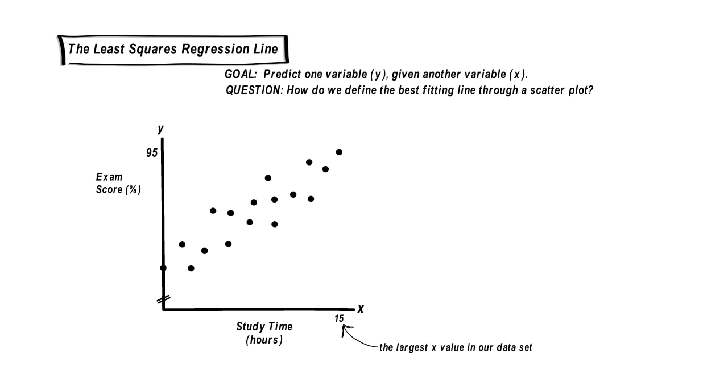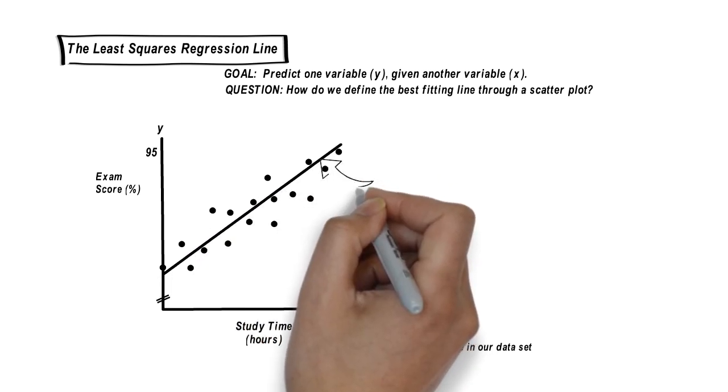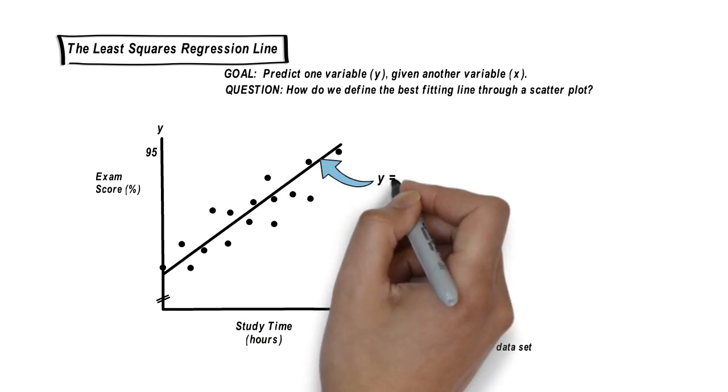So here we go. Let's say this line is the best line through the dots. We can model it with a simple linear equation, y equals b plus mx.